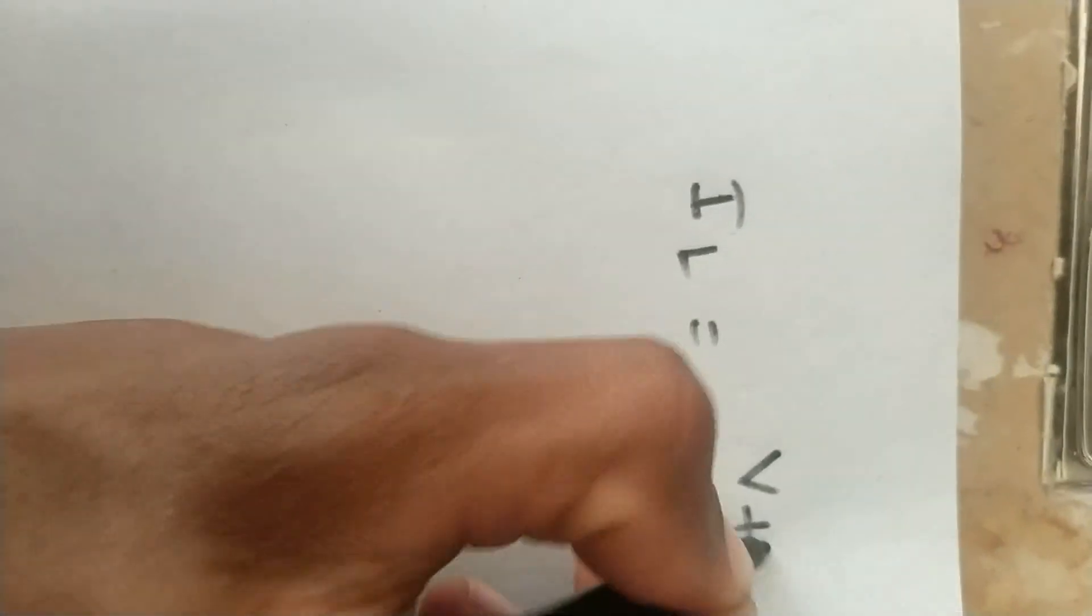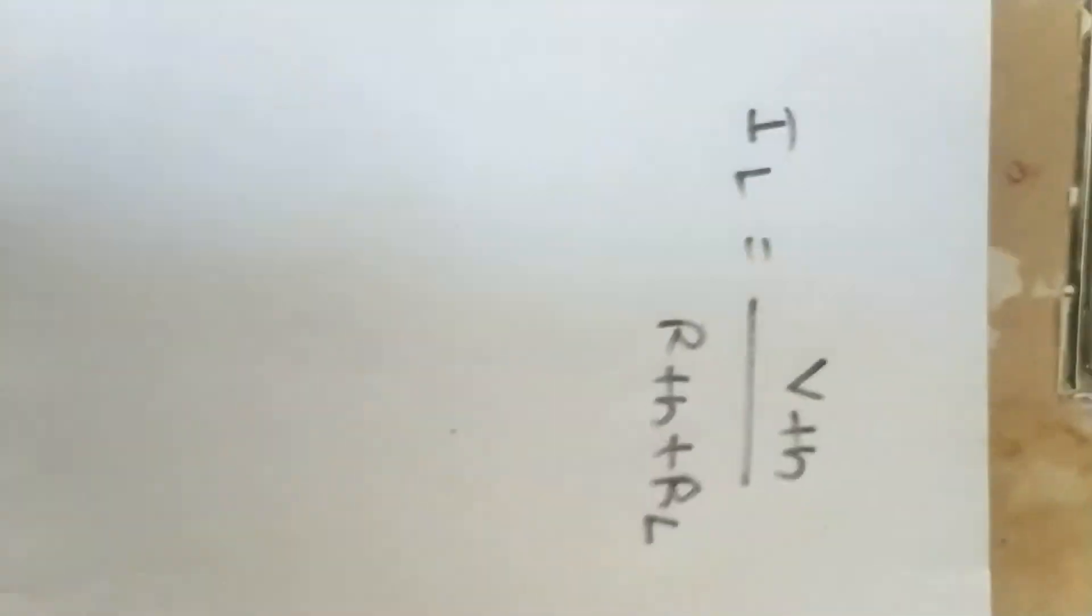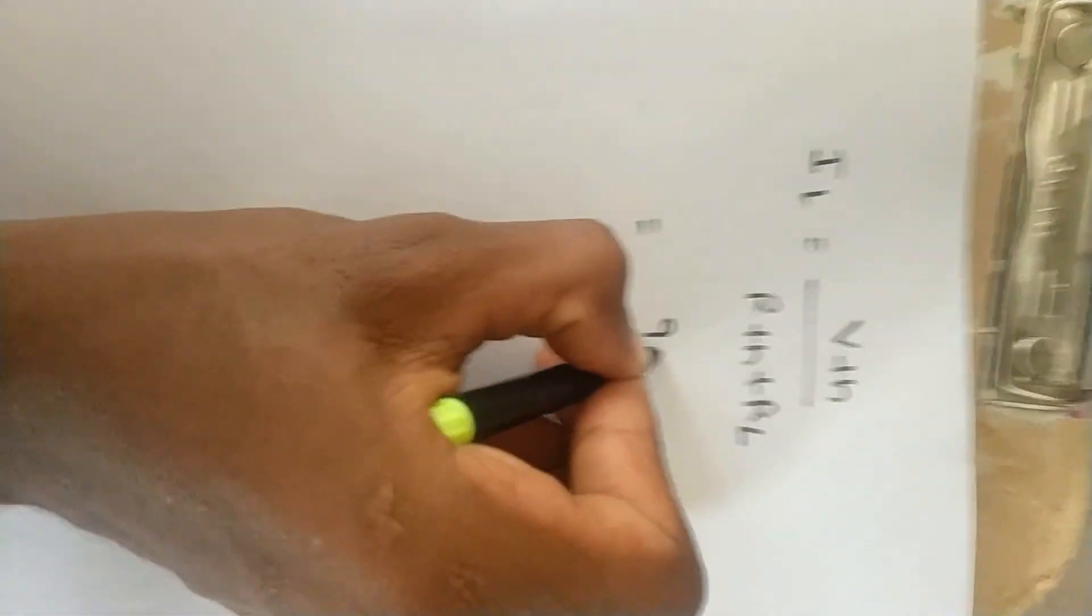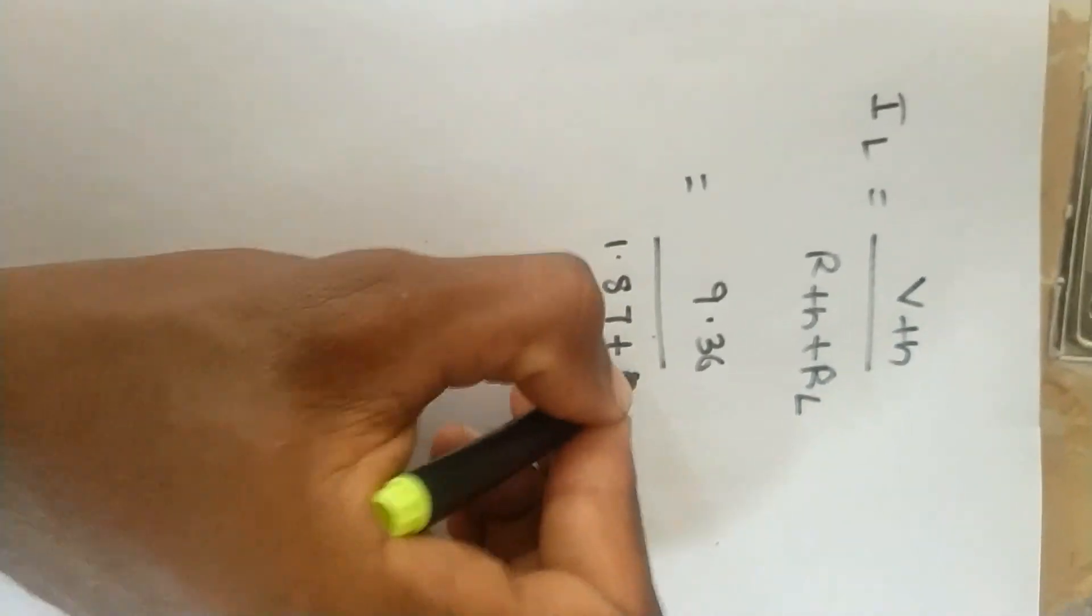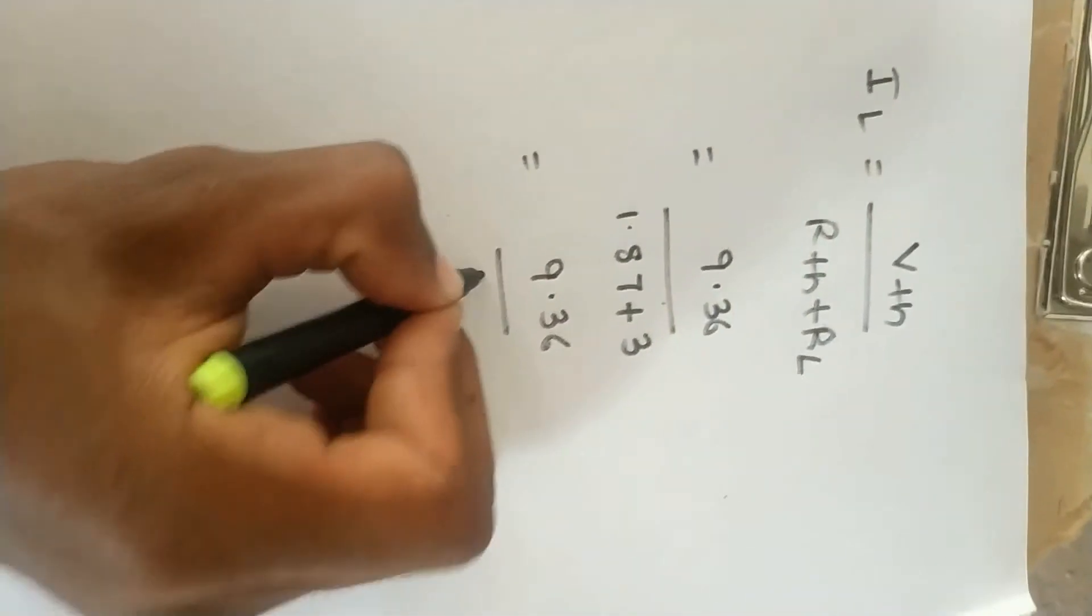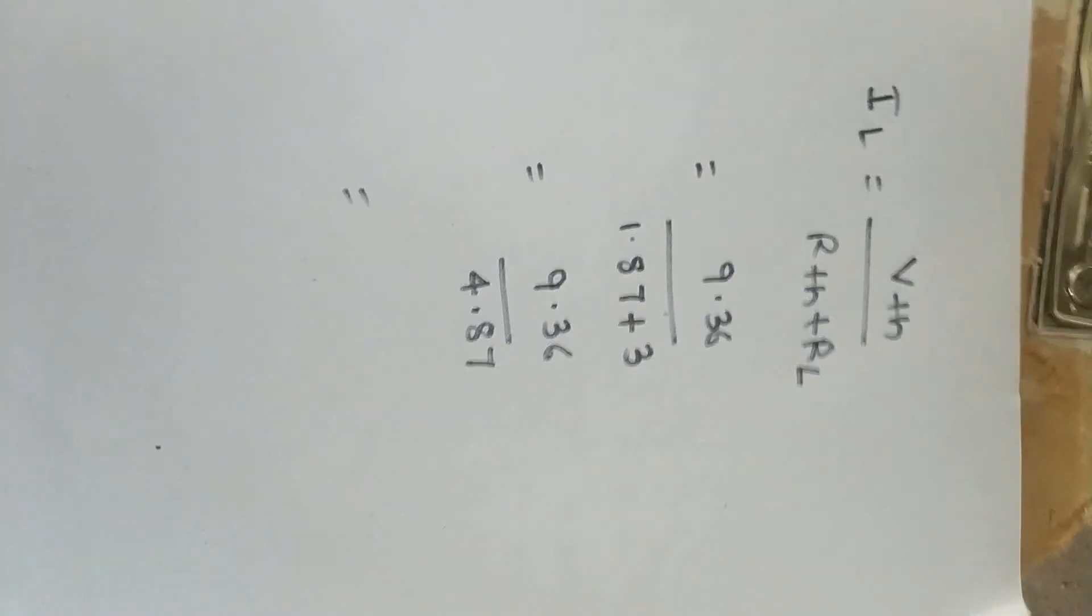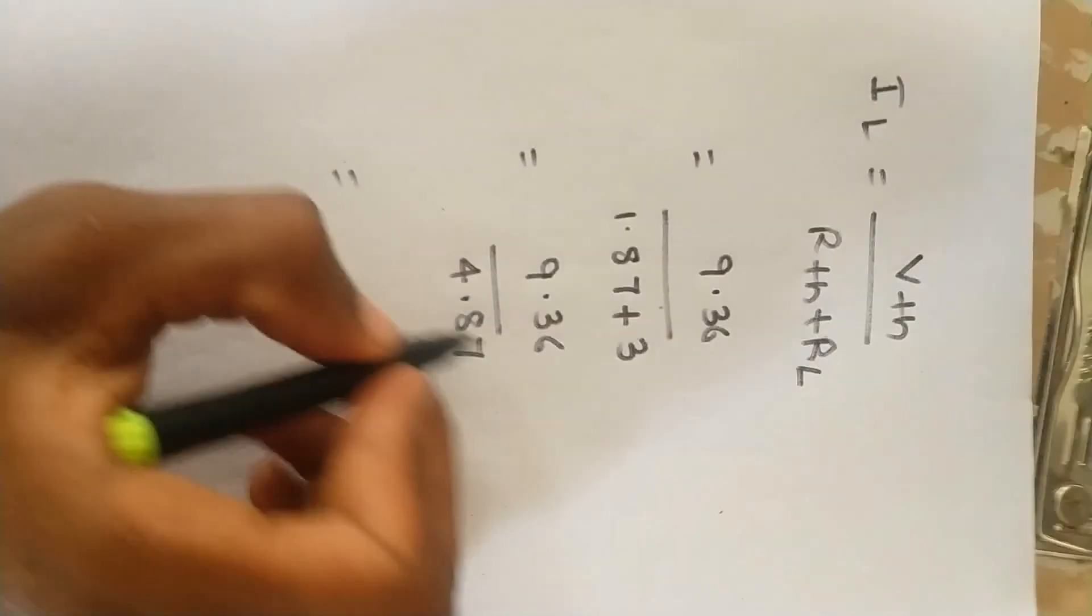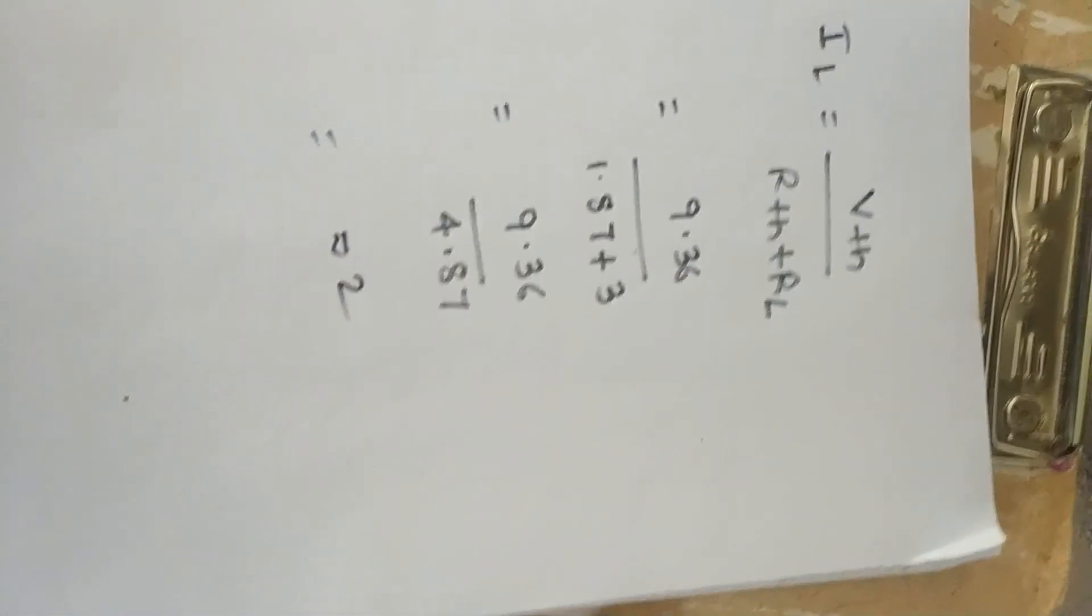The load current I_L equals V_th divided by (R_th plus R_L), which is 9.36 divided by (1.87 plus 3) equals 9.36 by 4.87.